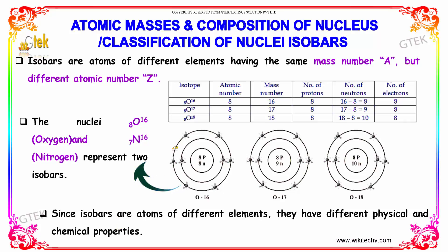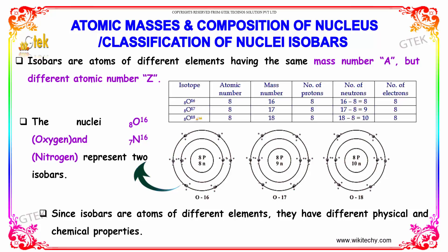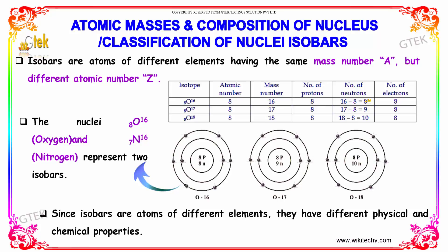This is how typical problems work. You will be given oxygen with mass numbers 16, 17, and 18, which all indicate an atomic number of 8. The number of protons is 8, so mass number minus protons gives you the neutrons, and the number of electrons equals the atomic number, which is 8.